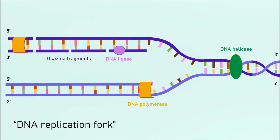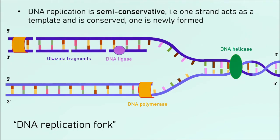We call this whole process semi-conservative. Breaking down the word: 'semi' means half, and 'conservative' means conservation or keeping something. Basically, two of the strands are from the original DNA molecule, and two are new — formed from the free nucleotides in the nucleus. So we have a one-to-one ratio: half old, half new. Each new DNA molecule contains one old strand used as a template and one new strand formed from free nucleotides in the nucleus. In an exam question about semi-conservative replication, you would say that one strand is the old strand used as a template, and the other is new, formed from free nucleotides.